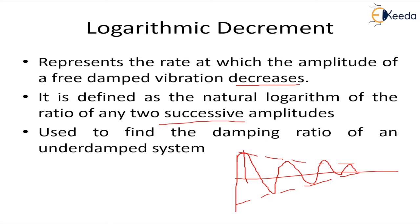We see that the amplitude is decreasing, so the ratio of the amplitude of any two successive cycles gives the logarithmic decrement. We use it to find the damping ratio of under-damped systems, because only in the case of under-damped systems where zeta is less than 1 do we see oscillations in the presence of damping.